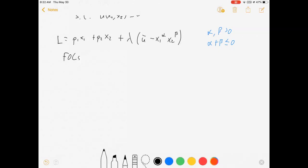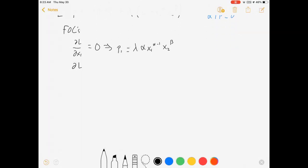So first order conditions. DL DX1, it's one of our choice variables. We're going to set that equal to 0. What's that going to look like? P1 minus lambda alpha x1 to the alpha minus 1 x2 to the beta minus 1.